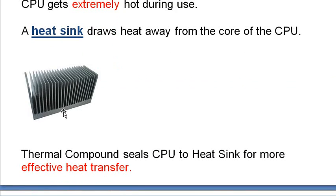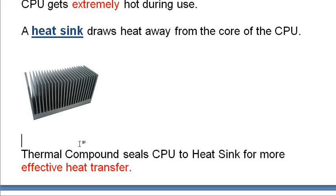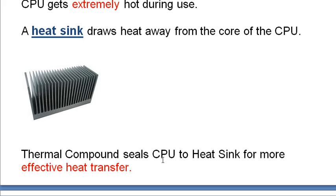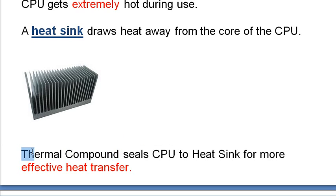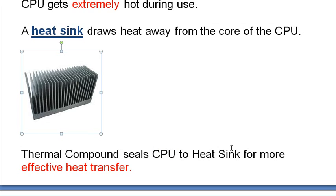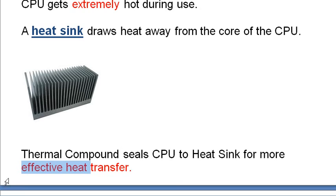To add effectiveness, they put what's called thermal compound between the CPU and the heat sink. When you're installing a heat sink, you put a bit of thermal compound — it's like a liquid — on top of the CPU, then place the heat sink on top so they're sealed together. The thermal compound is a highly heat-absorbent material that absorbs heat from the CPU and transfers it to the heat sink more effectively.